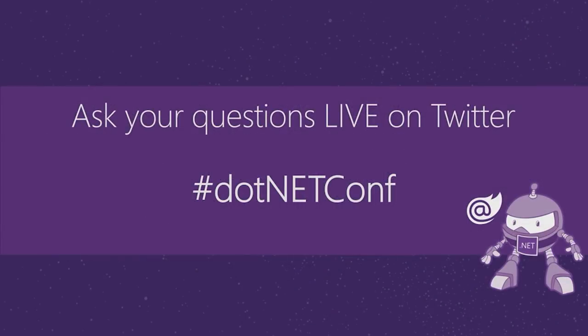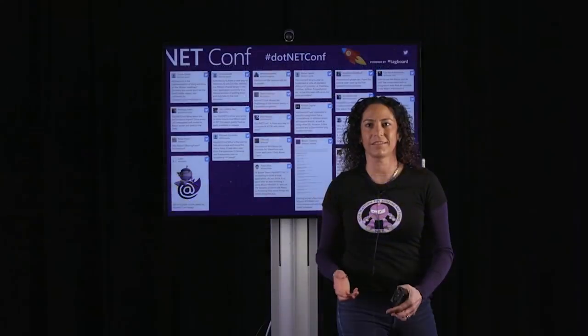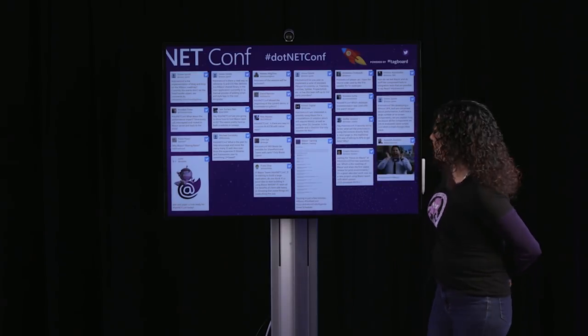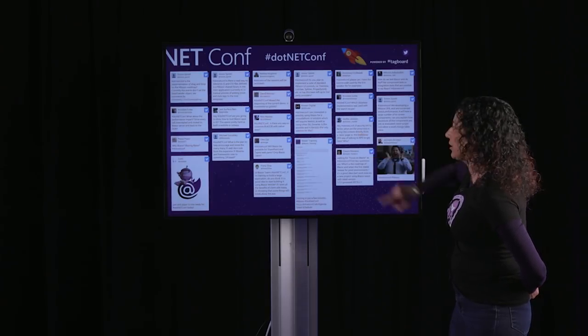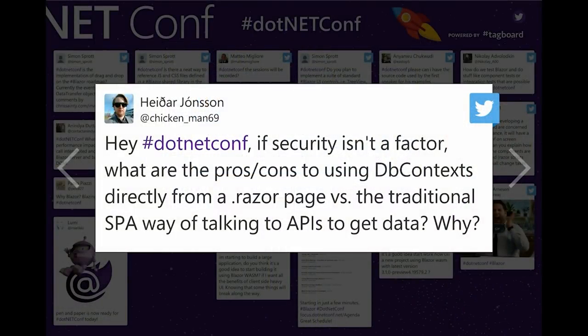Now ready for live questions. Q: If security isn't a factor, what are the pros and cons of using DbContext directly from a Razor page versus the traditional SPA way of talking to APIs? A: With Blazor Server, your code runs on the server, so you can directly access the database without needing API endpoints. With Blazor WebAssembly, code runs client-side in the browser, so you do need API endpoints. A common pattern is abstracting data access into a service with different implementations per hosting model.